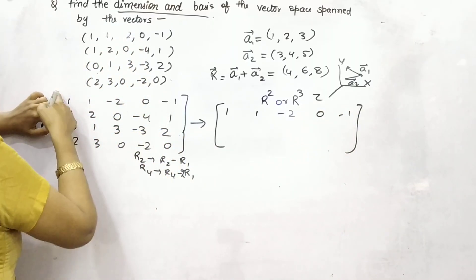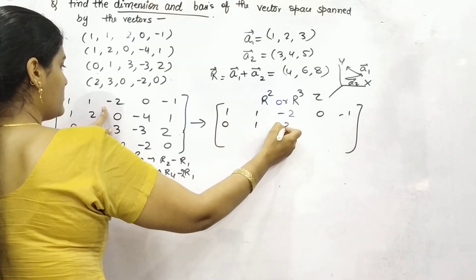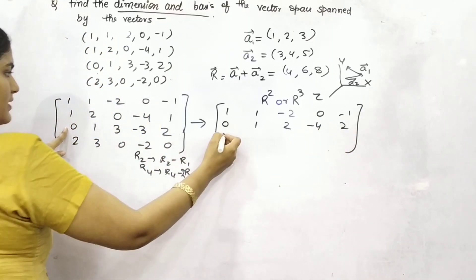Second, R2 minus R1, 1 minus 1 is 0, 2 minus 1 is 1, plus 2, minus 4, 2, right?